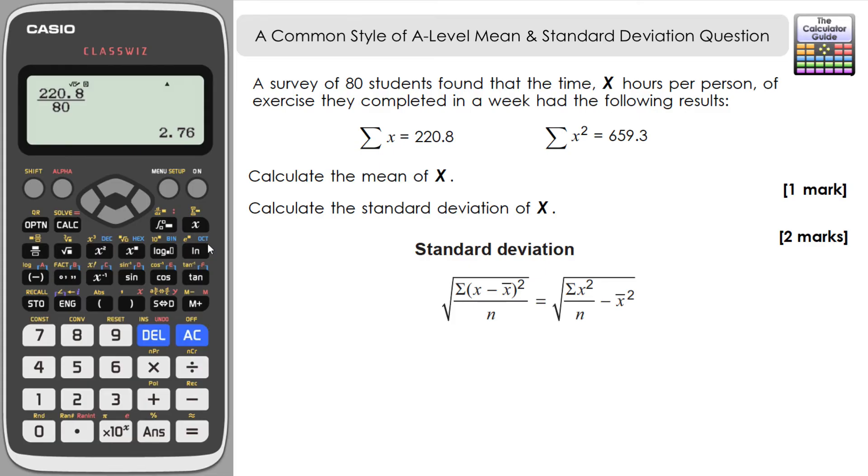And then the other term is the sum of x squared - that is basically squaring all the values that we had. We don't have access to the actual data, but they would have been squared and then summed up to produce this figure 659.3, and that's then divided by the number of values which is 80.